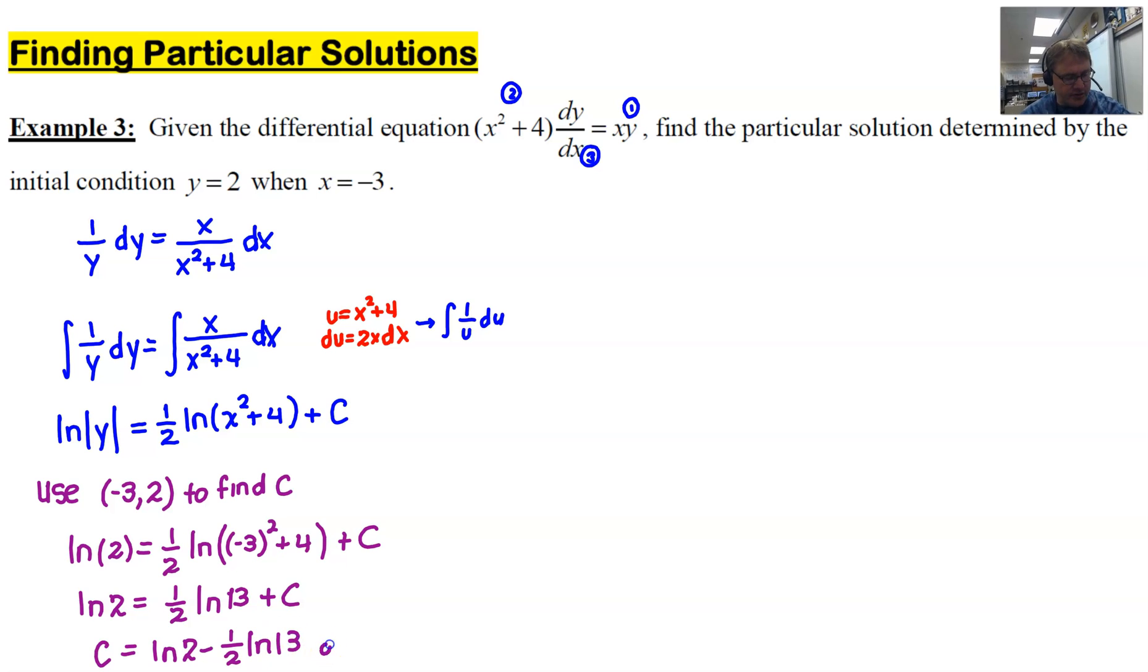You could move that 1/2 up into the exponent of the 13 and you could write this as the square root of 13. You could even go one step beyond and we could write this as the natural log of the fraction 2 over square root of 13. That's perfectly legal because whenever you're subtracting two logarithms, that manifests itself into this logarithm of a quotient. So we'll probably decide maybe which is best here in just a moment when we start rewriting our final answer.